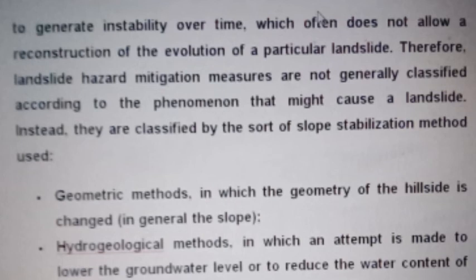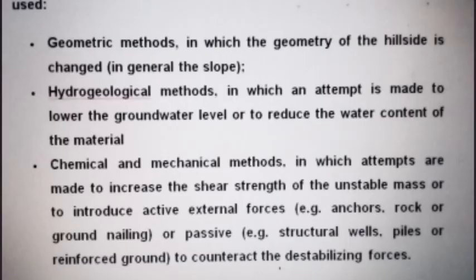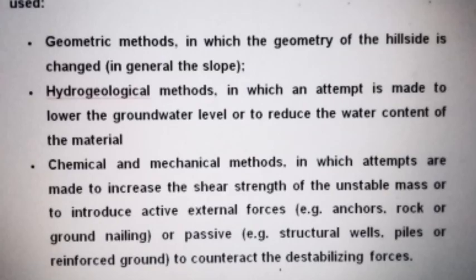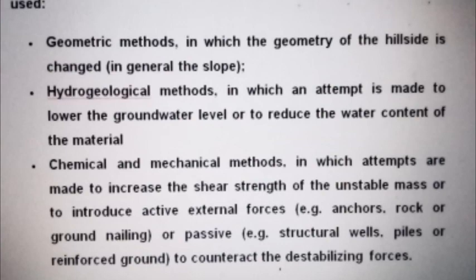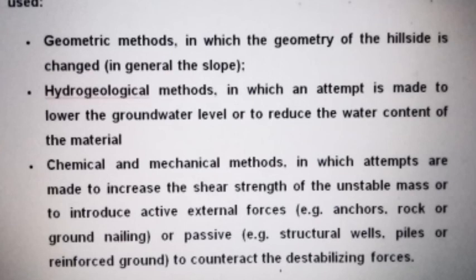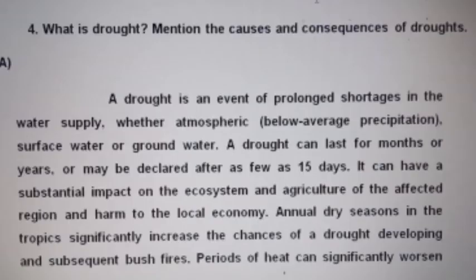Landslide mitigation measures are classified by the sort of slope stabilization method used: geometric methods, in which the geometry of the hillside is changed to reduce the slope; hydrological methods, in which an attempt is made to lower the groundwater level or to reduce the water content of the material; and chemical and mechanical methods, in which attempts are made to increase the shear strength of the unstable mass or to introduce active external forces such as anchors, rock nailing or ground nailing, or passive forces such as structural wells, piles, or reinforced ground, to counteract the destabilizing forces.